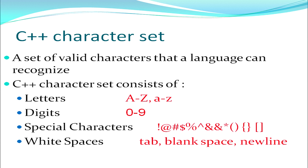Every language in this world has got a certain set of characters. For example, English language has got the alphabets A to Z. Similarly, Hindi language has got its own character set. In the same manner, when I am learning a programming language, I need to know its character set. These are the set of valid characters that a language can recognize. Each character has got its own property, its own feature, its own usage. So a C++ character set consists of letters which are alphabets from A to Z in capital and A to Z in small.